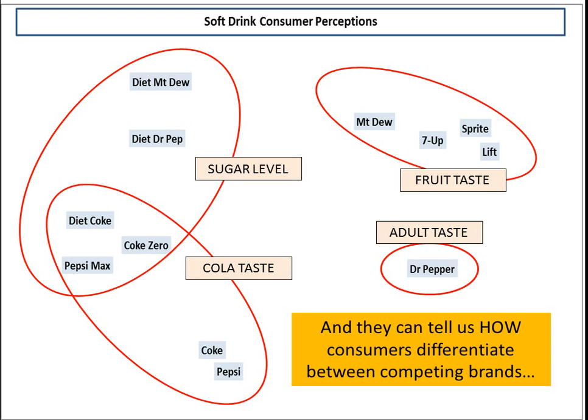A more challenging aspect is working out how consumers are actually clustering the brands into sets. We have to figure out what dimensions or attributes they're probably using. In this case, I've made a guess: there's clearly a cola taste down at the bottom, then something to do with diet and sugar running up the left-hand side, then a fruity taste, and then Dr Pepper out by itself which I've referred to as an adult taste.